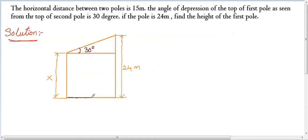And the distance between two poles is 15 meters. And also this length is nothing but x. And the length of this triangle is 24 minus x. So, here x is the height of the first pole. We need to solve for x here.